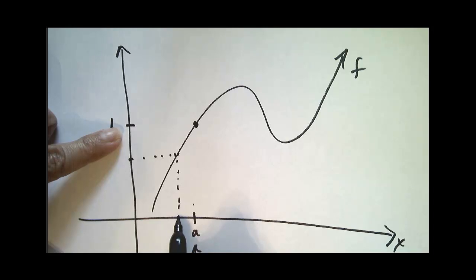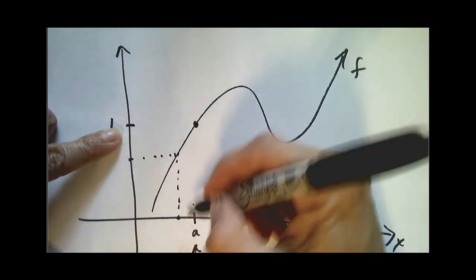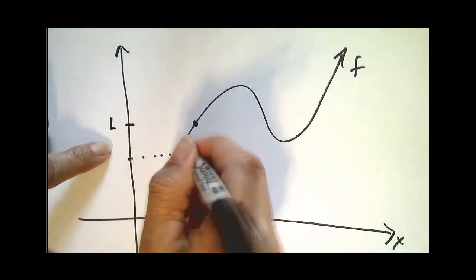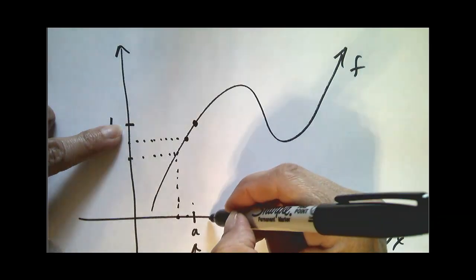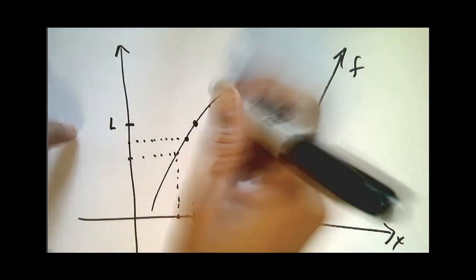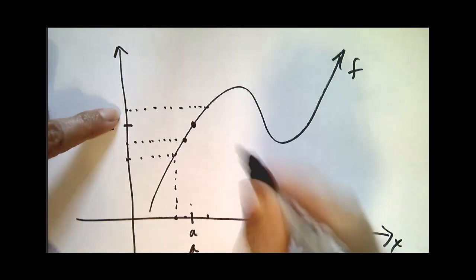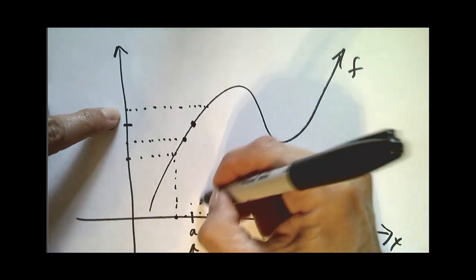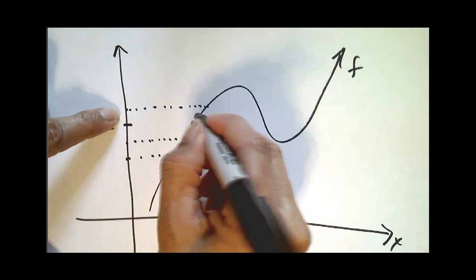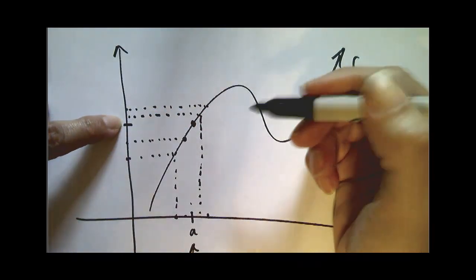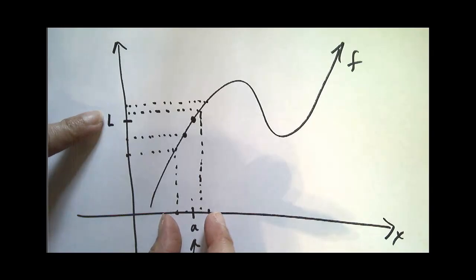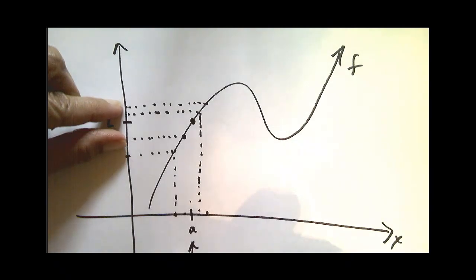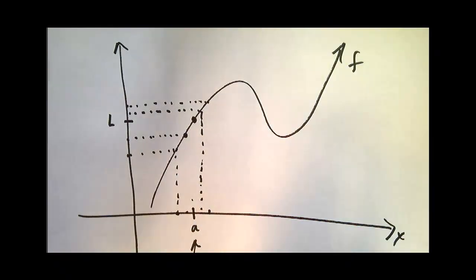If I pick an x value to the left of a, it gets mapped to a y value very far from l. But if I pick an x value closer to a, I get a y value that is closer to l. Likewise, if I pick an x value to the right of a and then one even closer, I get a y value that's even closer to l. As my x values get closer and closer to a on either side, my y values get closer and closer to l. That's the most basic idea behind a limit.